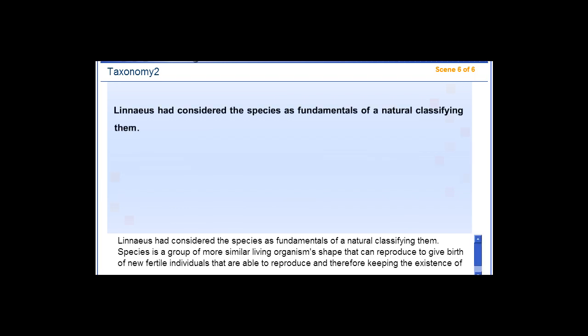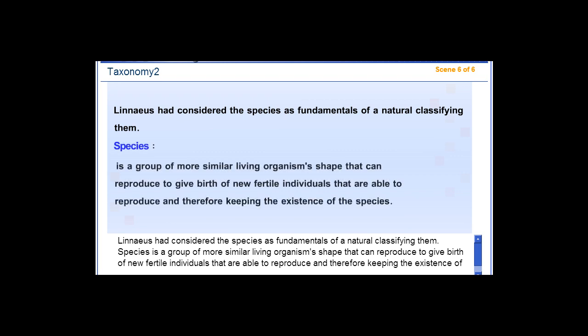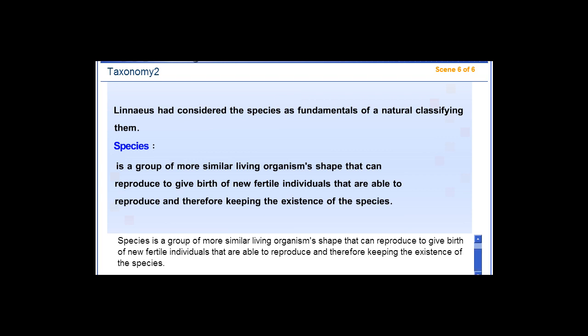Linnaeus had considered the species as fundamental in natural classification. A species is a group of more similar living organisms in shape that can reproduce to give birth to new fertile individuals that are able to reproduce, therefore keeping the existence of the species.